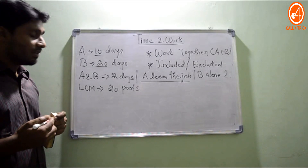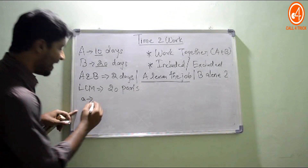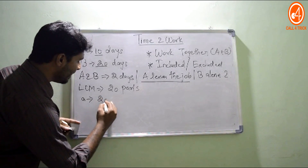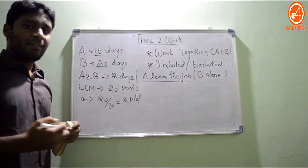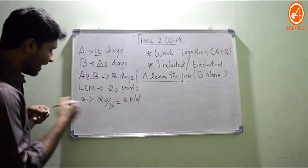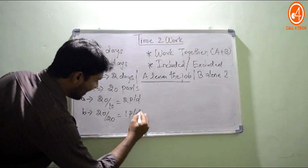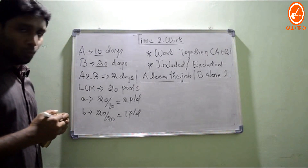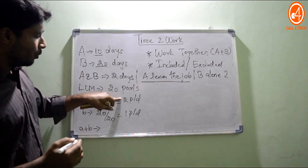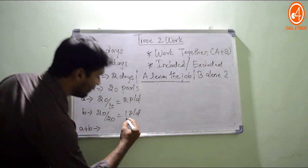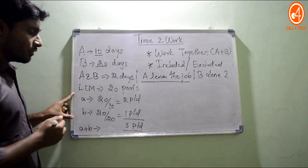The second step is finding the one-day work. A's one-day work is 20 divided by 10, which is 2 parts per day. B's one-day work is 20 divided by 20, which is 1 part per day. If A and B work together, their combined efficiency is 2 plus 1, which is 3 parts per day.